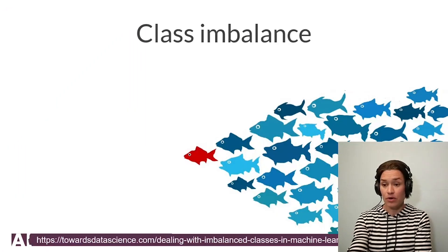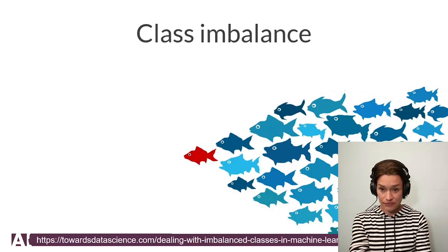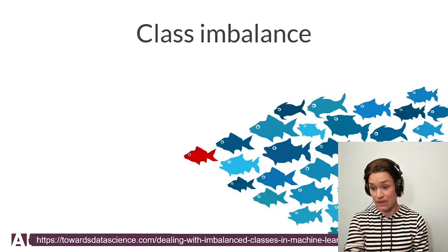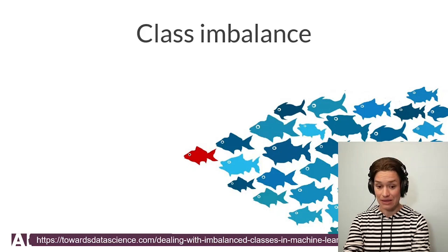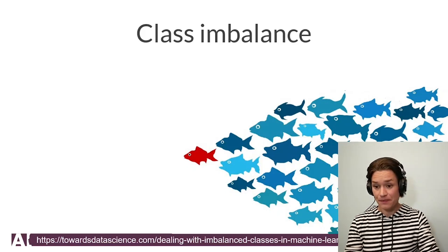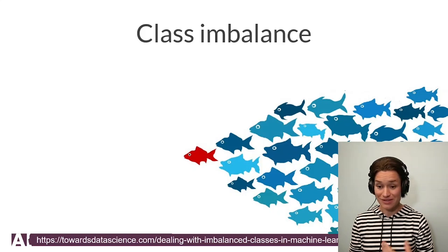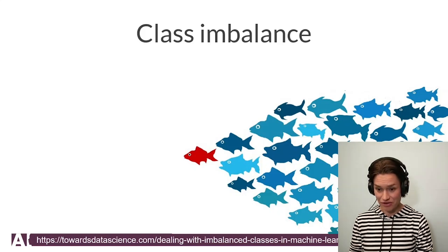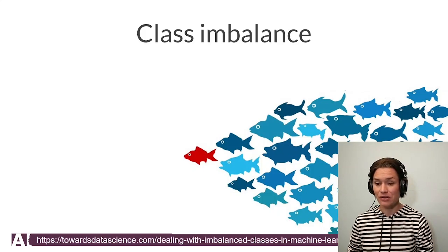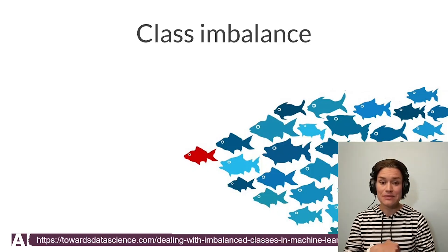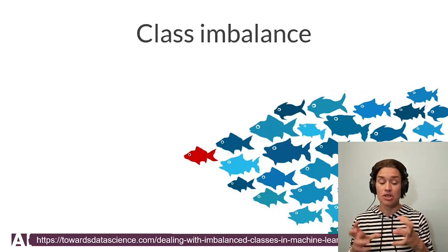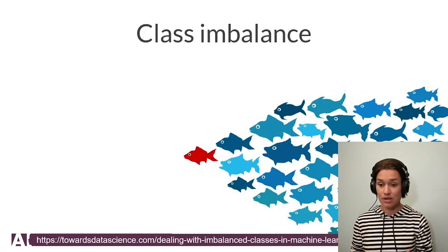An important problem in our medical profession — not only pathology, but in the whole medical profession — is class imbalance. Class imbalance means that the classes we're looking for are not equally represented in the image. In this example, you would just have one red fish and plenty of different blue fish. There is more blue than red. The system needs to see enough of each class of data to be able to later detect it.